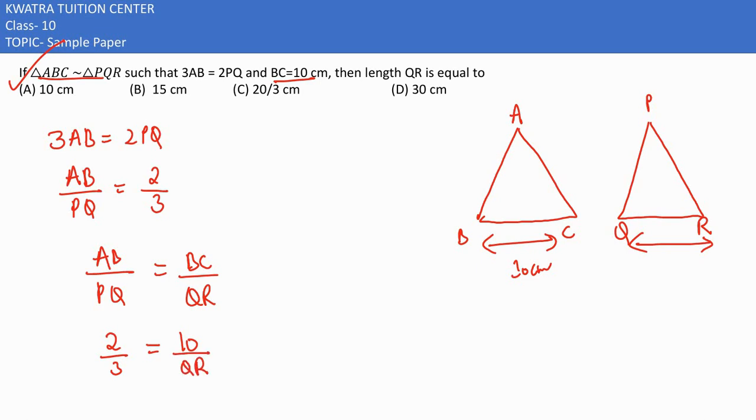Take QR on the left hand side, and 2 take the denominator and take 3 to the multiplication. 10 by 3 multiply, and 10 divided by 2 is nothing but 5. 5 into 3, it is 15 cm as QR.